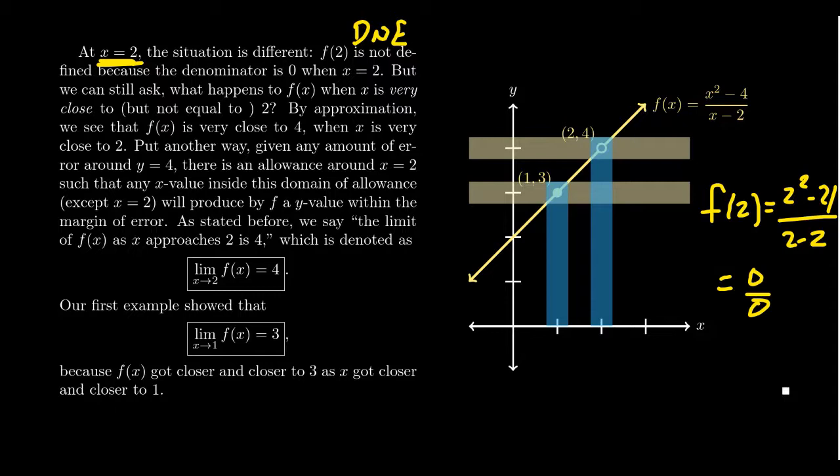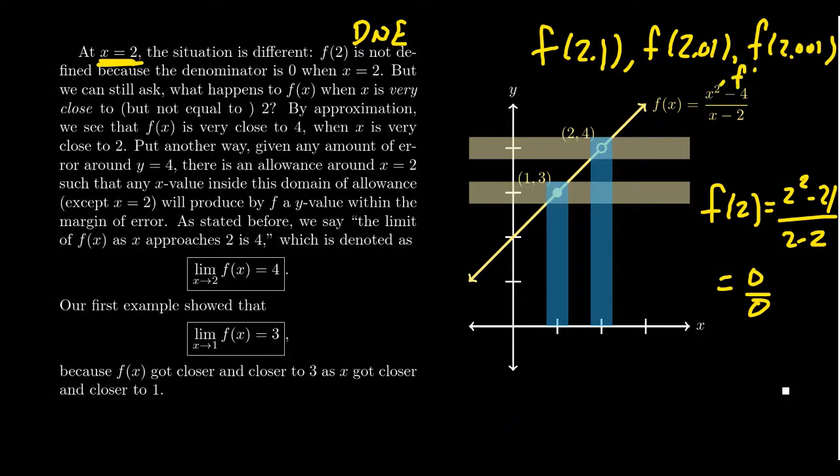We can't evaluate the function at two, but we can evaluate the function near two. If I look at f of 2.1, that's inside the domain. I can calculate it at 2.01, 2.001, 2.00000 lots of zeros with one at the end. All of those are going to be well-defined because none of those make the denominator go to zero.